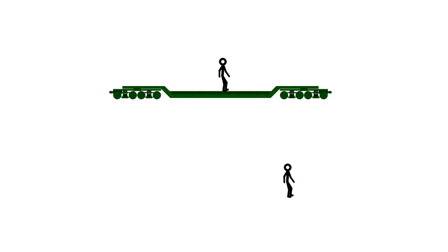The person on the train sees the light from the first strike start traveling to the person on the ground before the light from the second strike. But because he is moving in the direction of the second strike, they get to him at the same time.